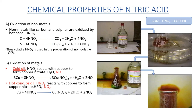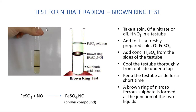The second chemical property is oxidation of metals. Here we study copper specifically. Cold dilute nitric acid reacts with copper to form copper nitrate, water, and nitric oxide. Note the key difference: when cold dilute nitric acid is used, nitric oxide gas is produced; when hot concentrated or dilute nitric acid is used, reddish brown nitrogen dioxide gas is produced. Both equations are very important.